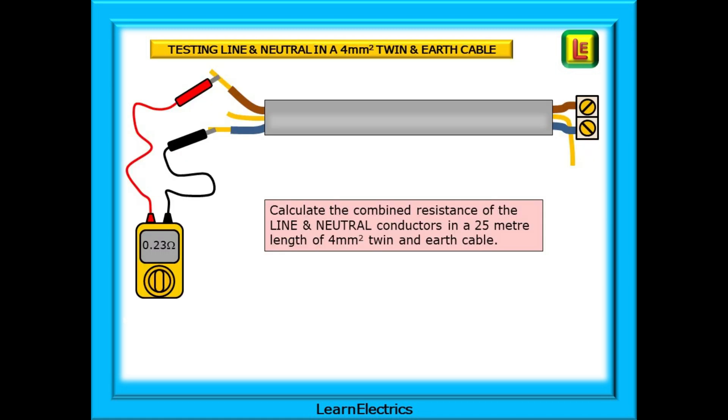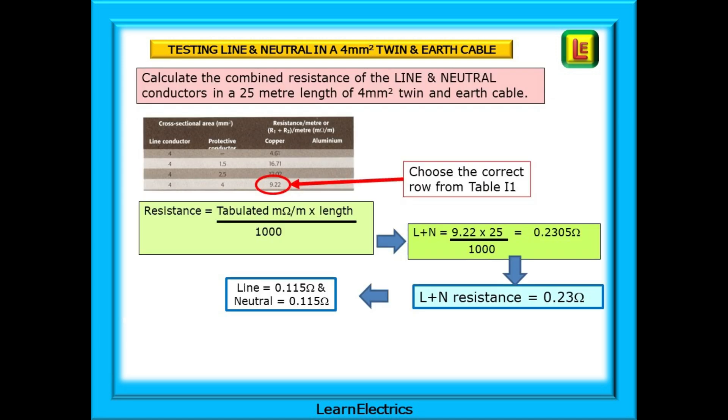We might be asked to check the combined resistance of the line and neutral in a 25 meter radial circuit incorporating 4 millimeter twin and earth cable. And this can be easily achieved by linking the two conductors at one end and testing at the other. Now we must choose the correct row in the table. 4 millimeter and 4 millimeter has a milli-ohm per meter value of 9.22 milli-ohms per meter length. The resistance of L plus N is 9.22 times 25 and divided by 1,000.